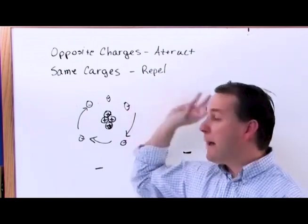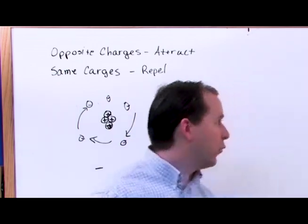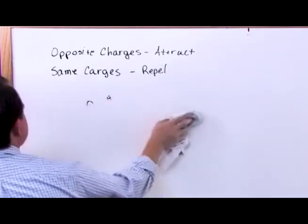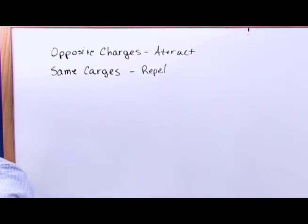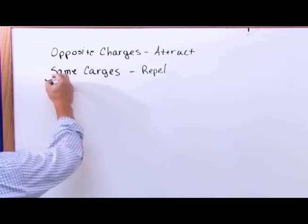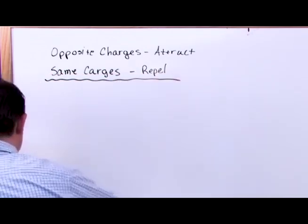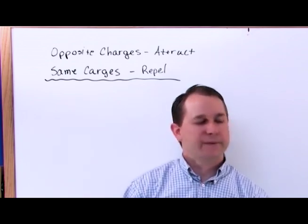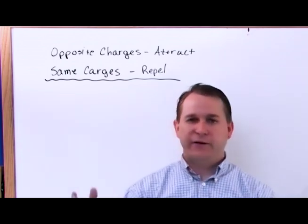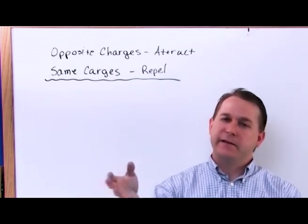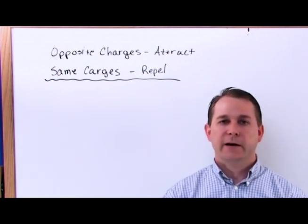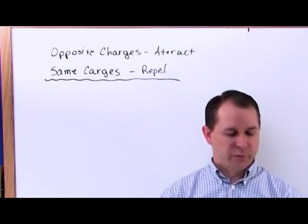So now we haven't done any math yet. This is just a basic idea of what charge is. Charge is something you can't see, charge is something you observe. Long time ago they realized that if you put two things together they attract. We called one of them positive, one of them negative. And if you take two of the like things and put them together, they're going to repel. So we called those both positive or both negative — that's how it sort of evolved.